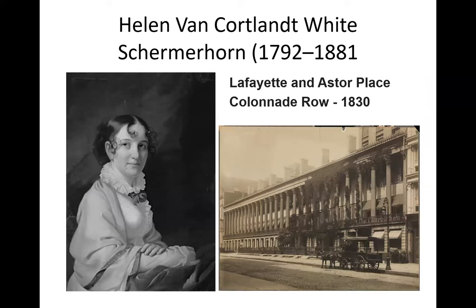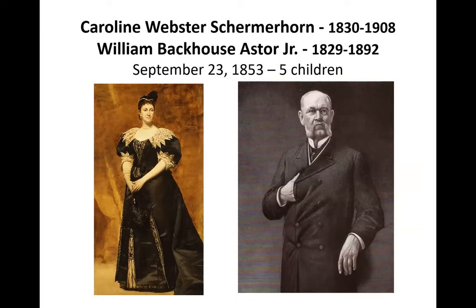She associated with good-quality people — Helen Van Cortlandt, White, Schimmerhorn. They were very proud of their names; there were no duchesses or princesses, but they let you know their ancestors. You can see the Colonnade Row of apartments for the wealthy as it looked in the 1830s. Carolyn Webster Schimmerhorn, born 1830, ended up marrying William Backhouse Astor Jr.; they married in 1853 and had five children.